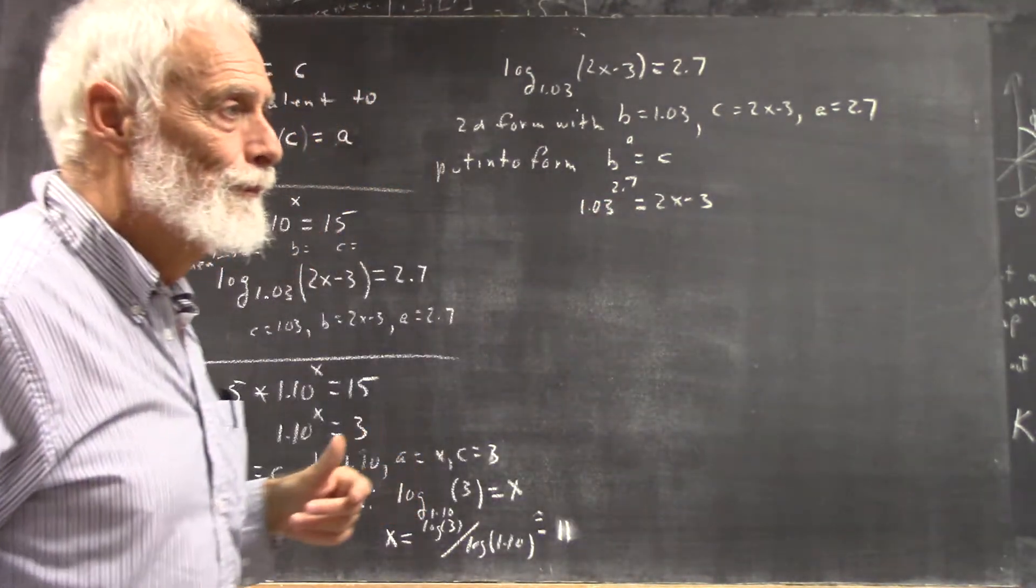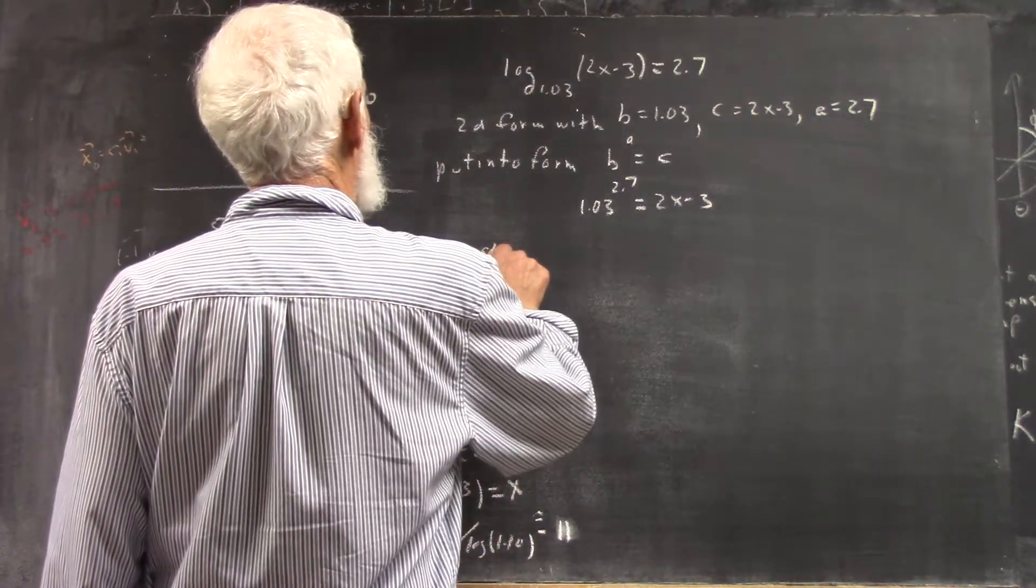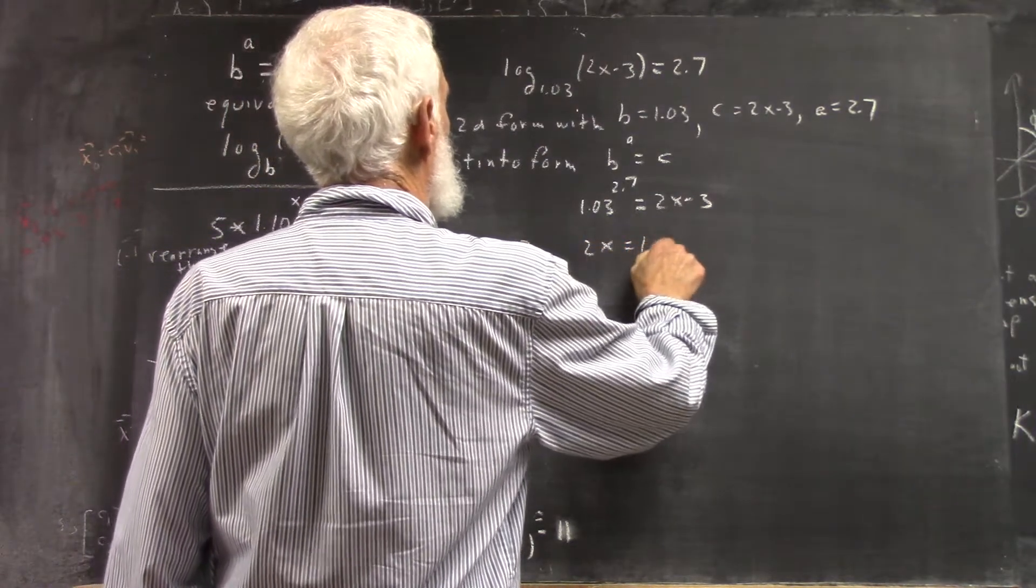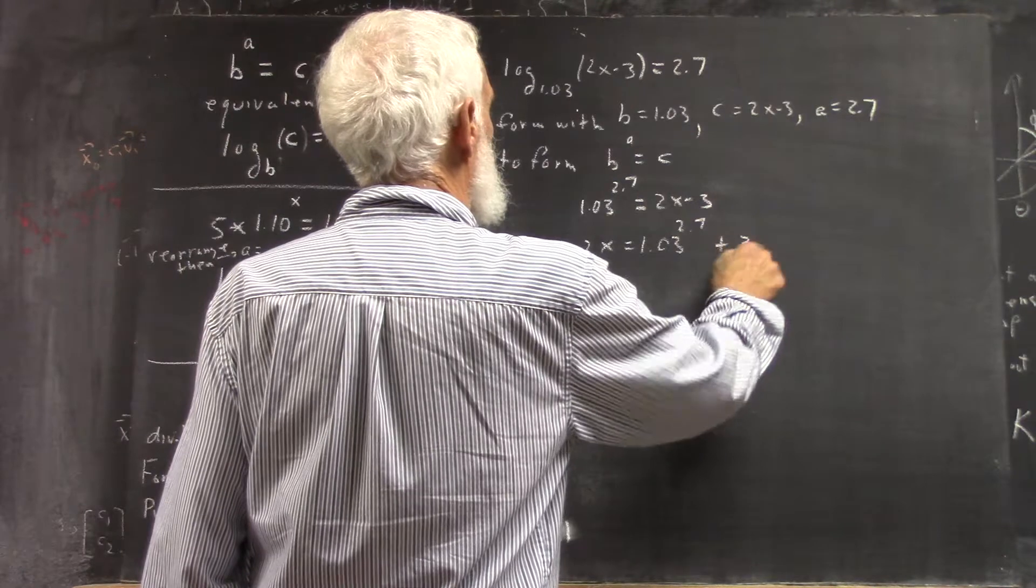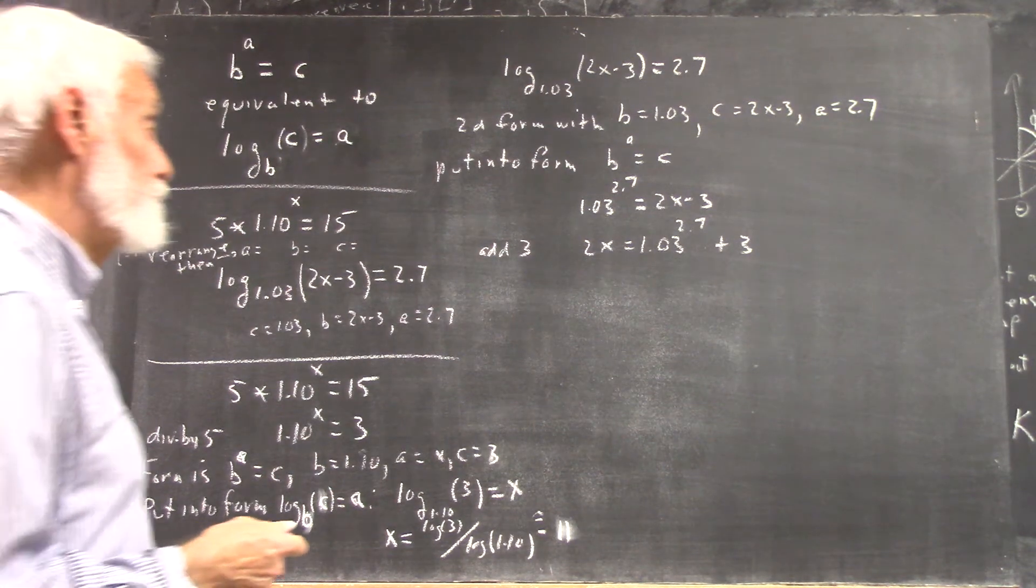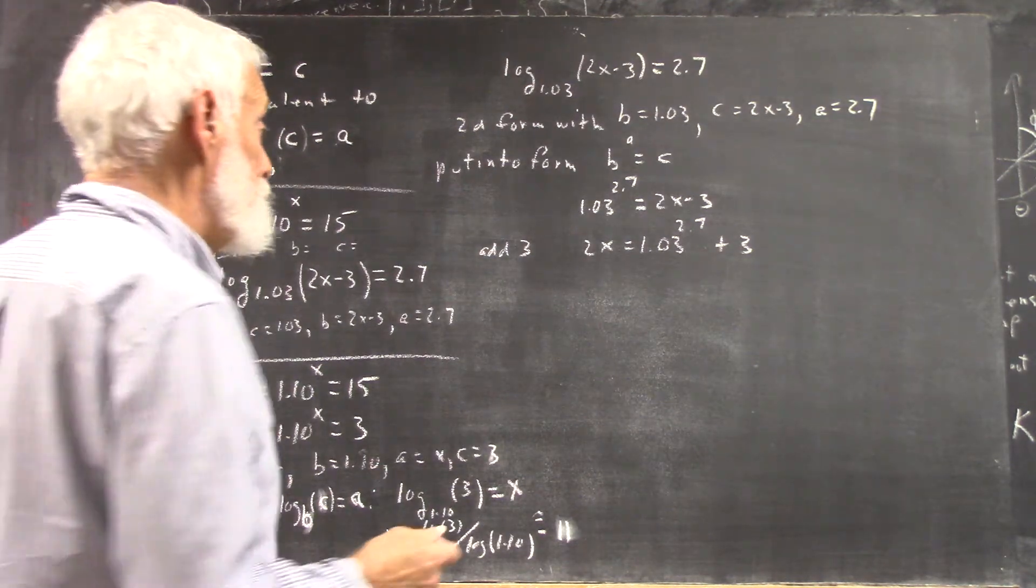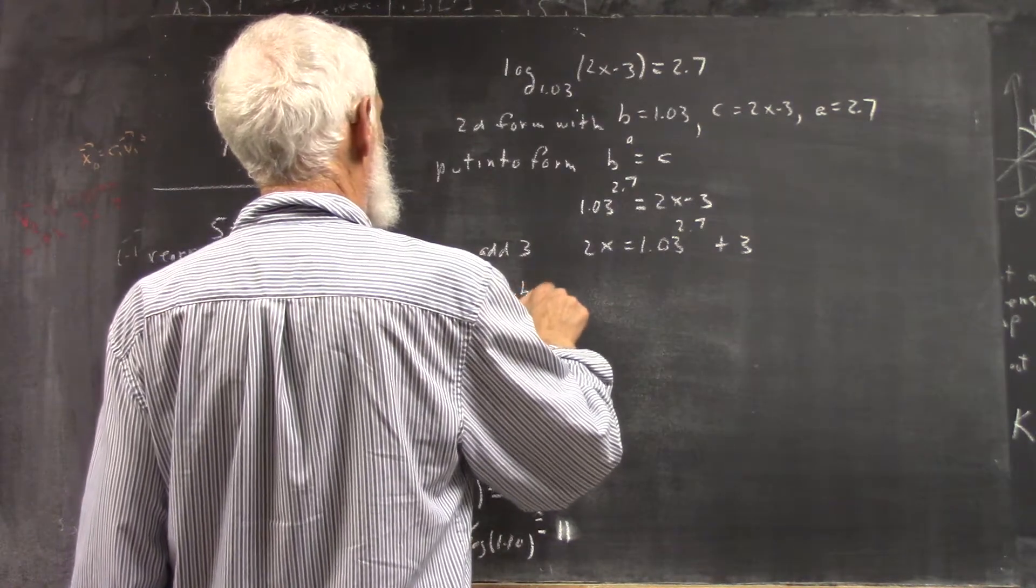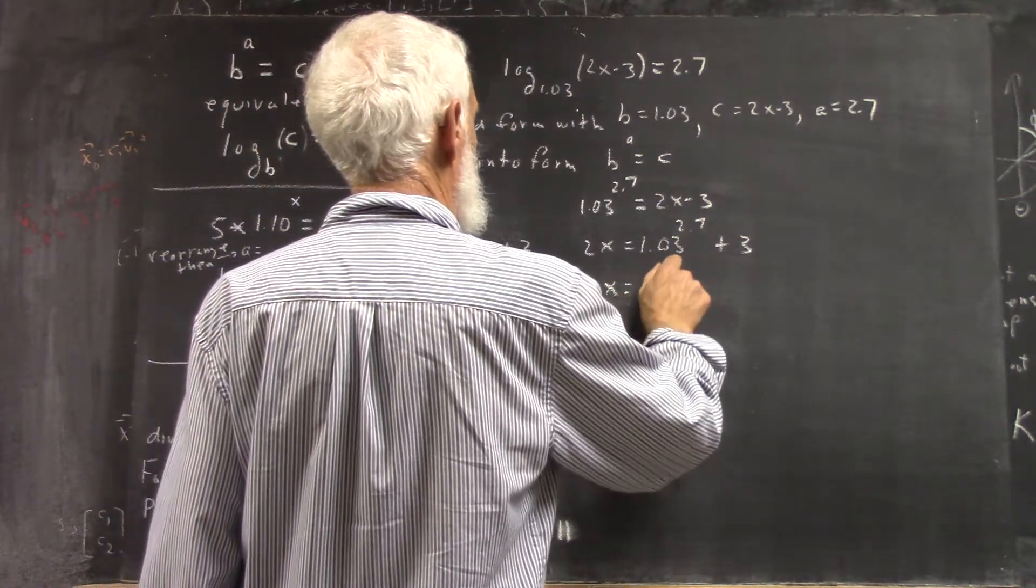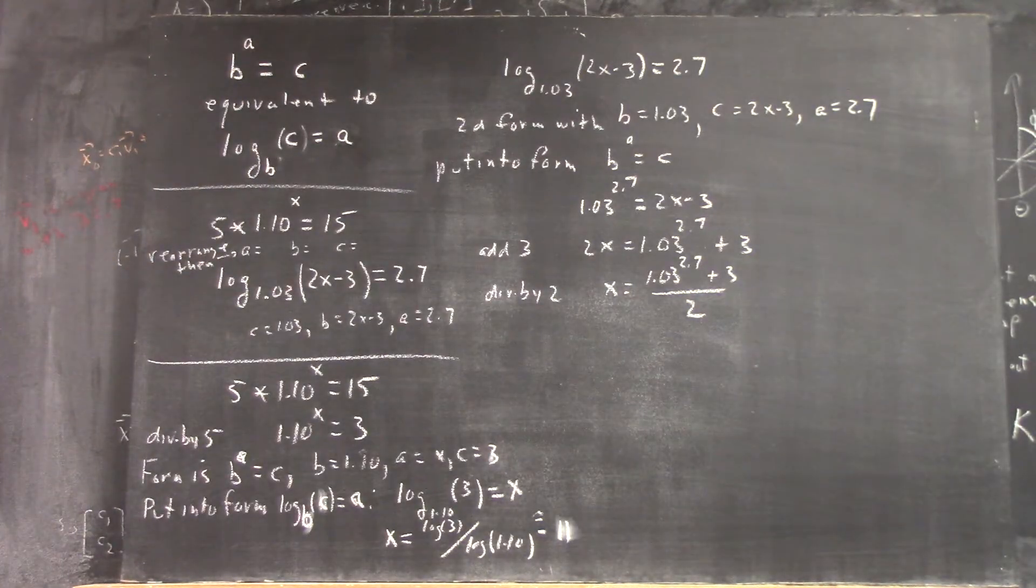But you do understand that this is a number you can get out of your calculator, right? I don't want you to do that first. I want you to do that last. I would add three to both sides. So clearly add three, you get 2x equals 1.03 to the 2.7 plus 3. Make sense? Then what do you do? Divide by 2. We get x. That is your exact solution, and I want to see exact solutions before any approximations.